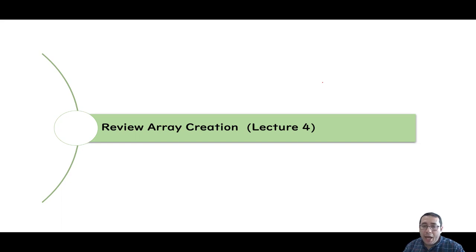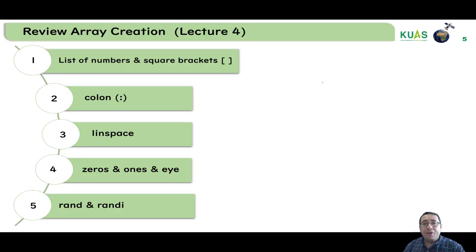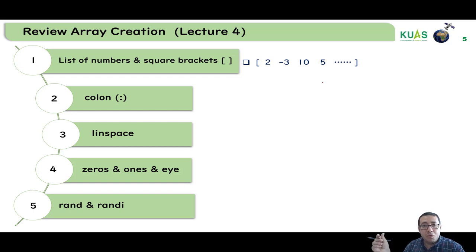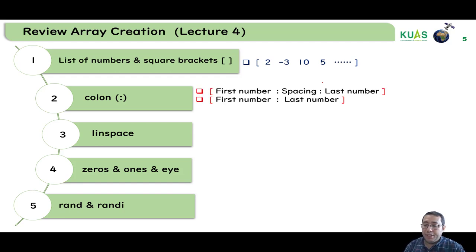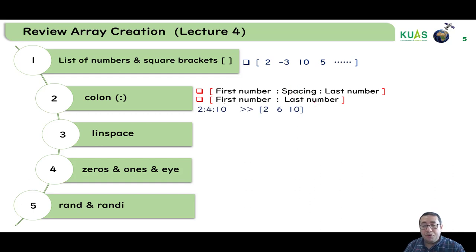Before going to indexing, a quick review about how to create arrays, since we need to create arrays before we can modify or delete elements. Details can be found in video number four about array creation. There are five ways to create an array. The first is using square brackets with a list of numbers, writing open square brackets and putting numbers separated by spaces to create a row vector.